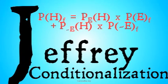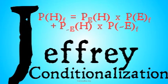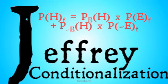Instead of the probability of H final being equal to the probability of H conditional on E, it's going to be: P(H final) = P(H|E) × P(E final) + P(H|¬E) × P(¬E final). You'll notice that when P(E) is 1 and P(¬E) is 0, this simplifies down to our original simple principle of conditionalization. We're assuming that P(E) and P(¬E) sum to 1 for this to work.